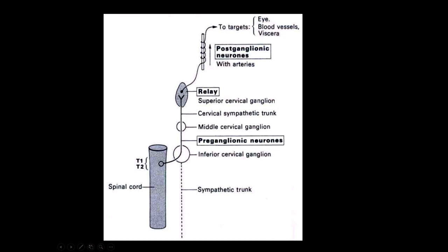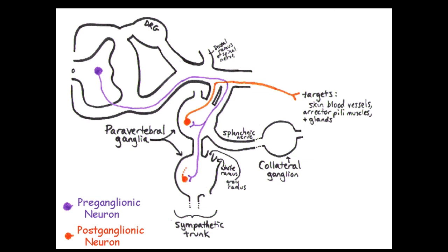Here's a drawing showing the preganglionic neuron, with the preganglionic fiber in purple going out to these paravertebral ganglia. Sometimes one axon may stimulate several different paravertebral ganglia. This fiber enters through what is labeled the white ramus, indicating it is myelinated. The preganglionic fiber is myelinated, goes in, and synapses in the paravertebral ganglion.